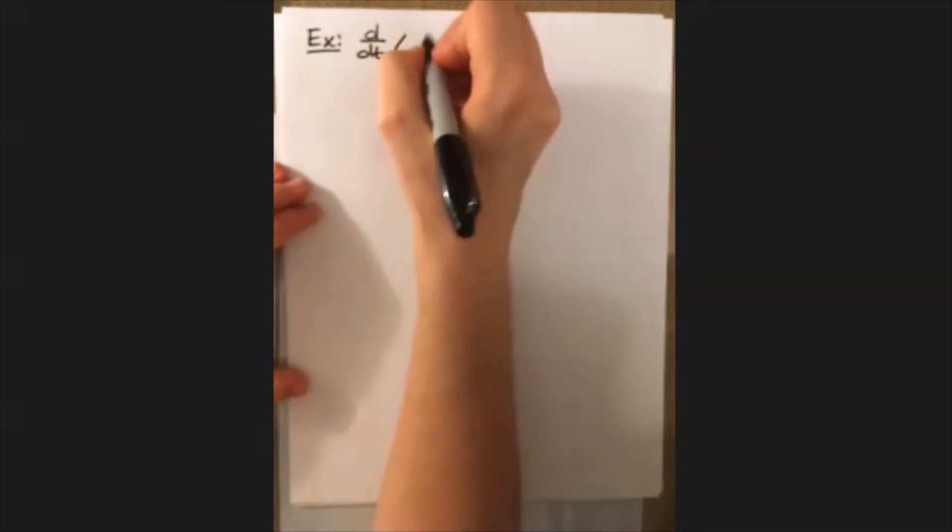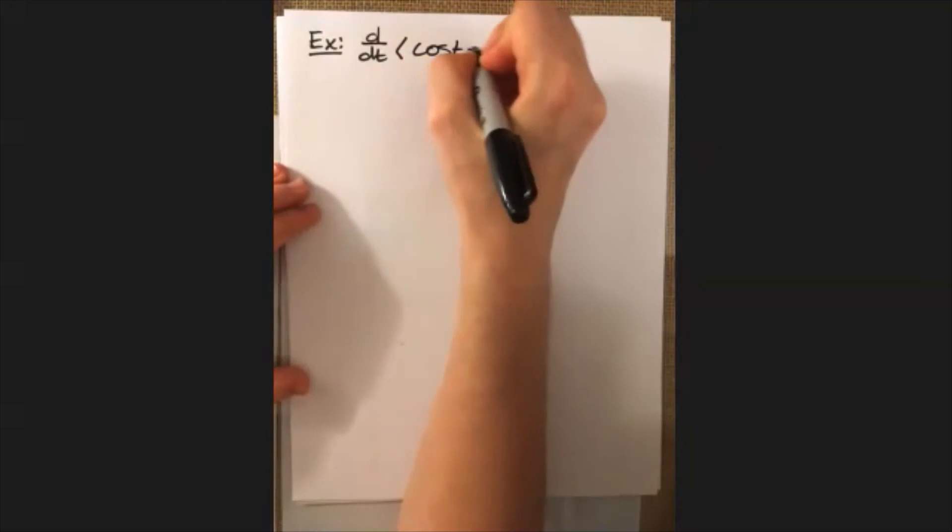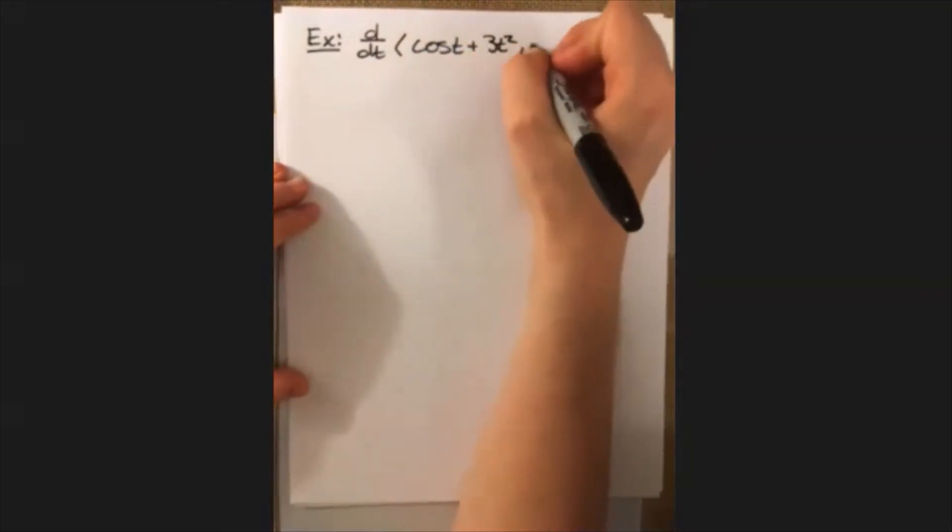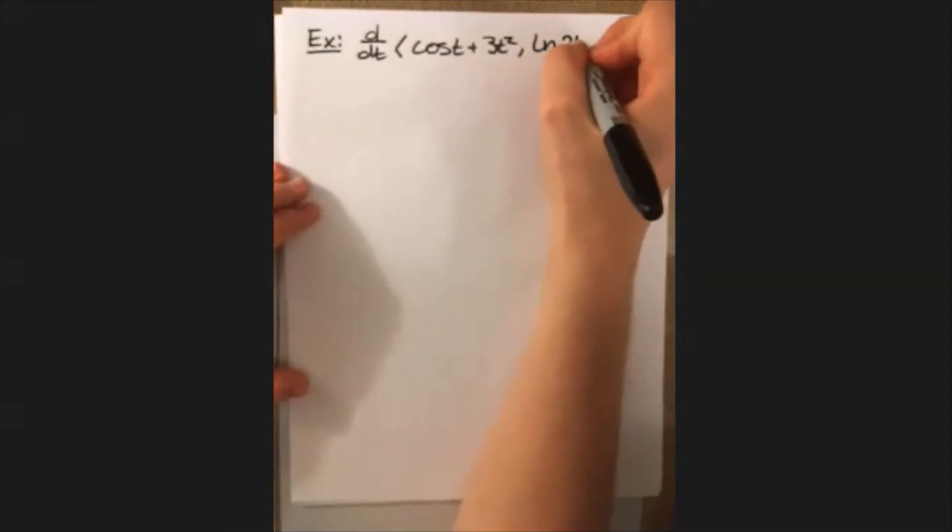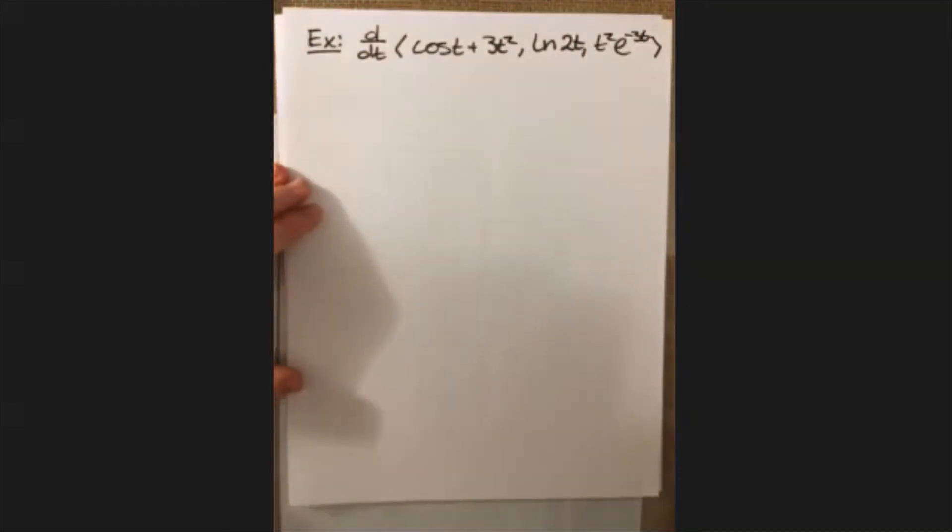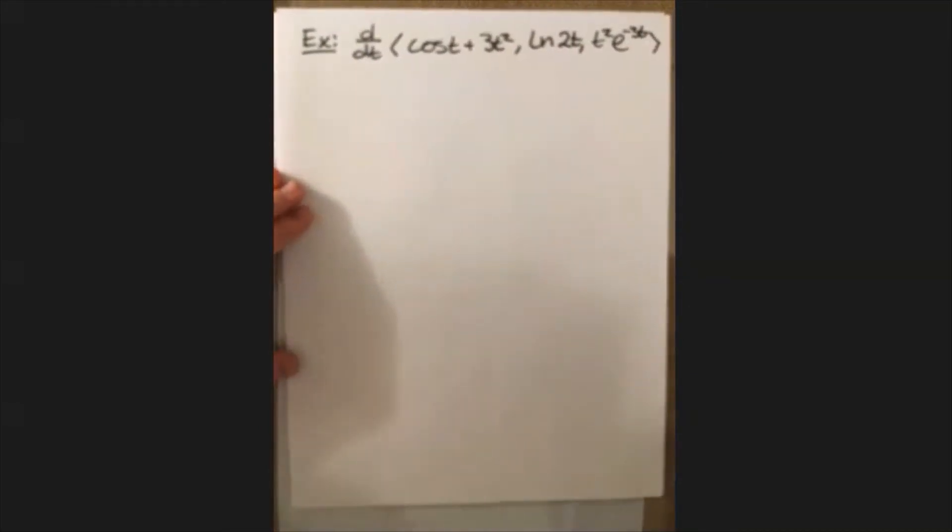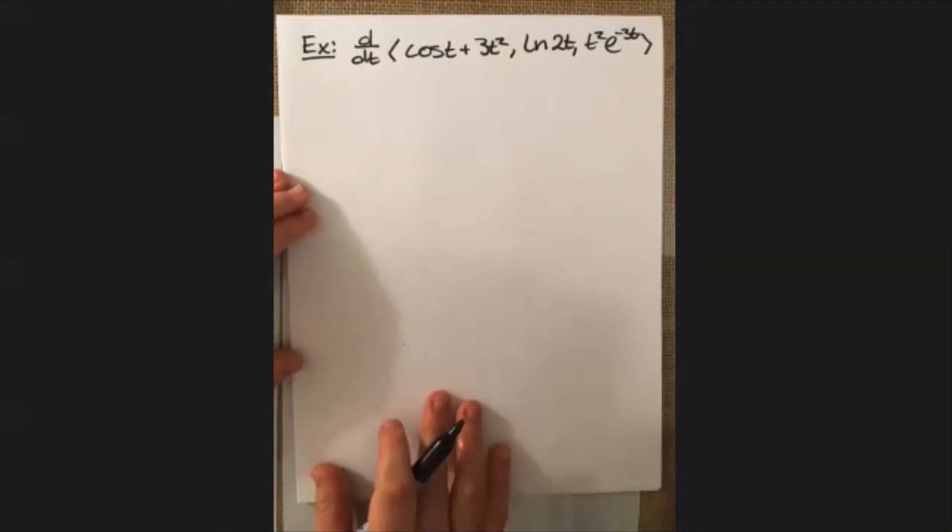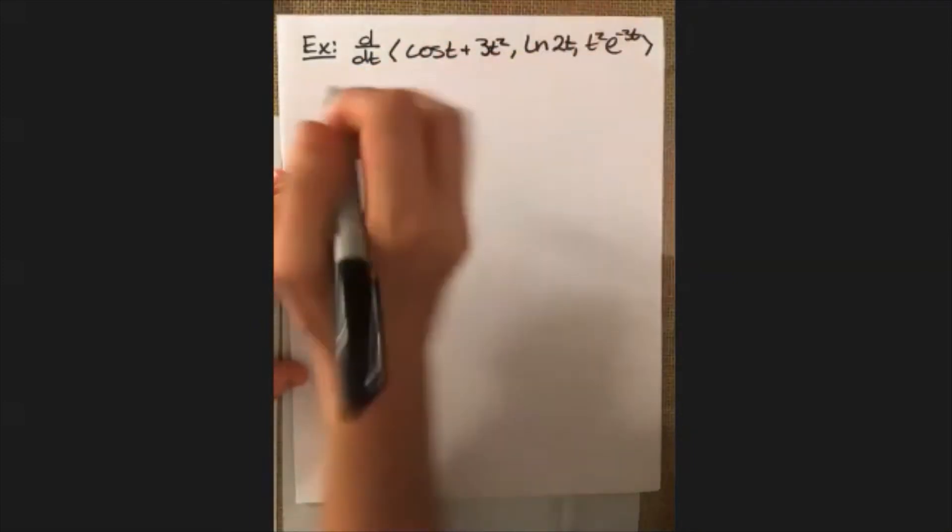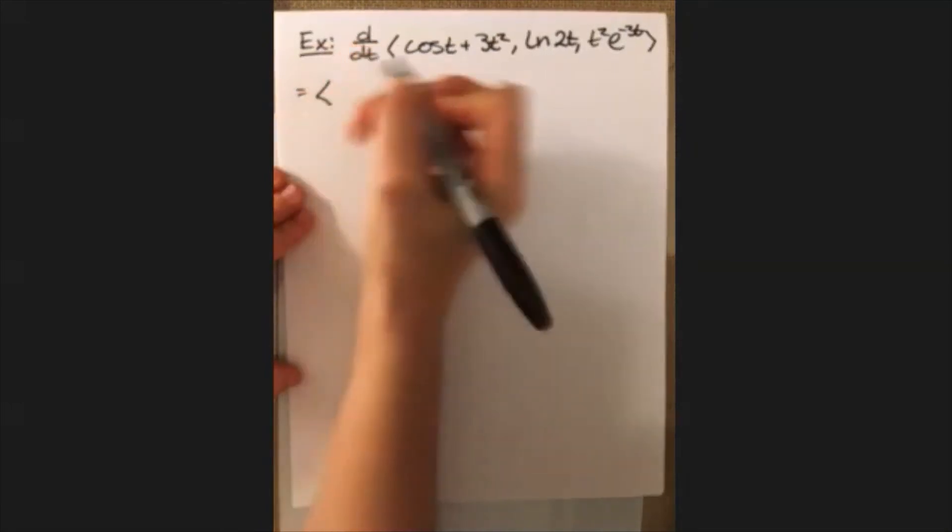Let's do an example with a derivative. Let's take the derivative of cosine of t plus 3t squared, the natural log of 2t, and then maybe t squared e to the negative 3t. Same idea. We are able to do this component wise, which really means that we can just take this derivative and apply it to each one of these pieces individually.